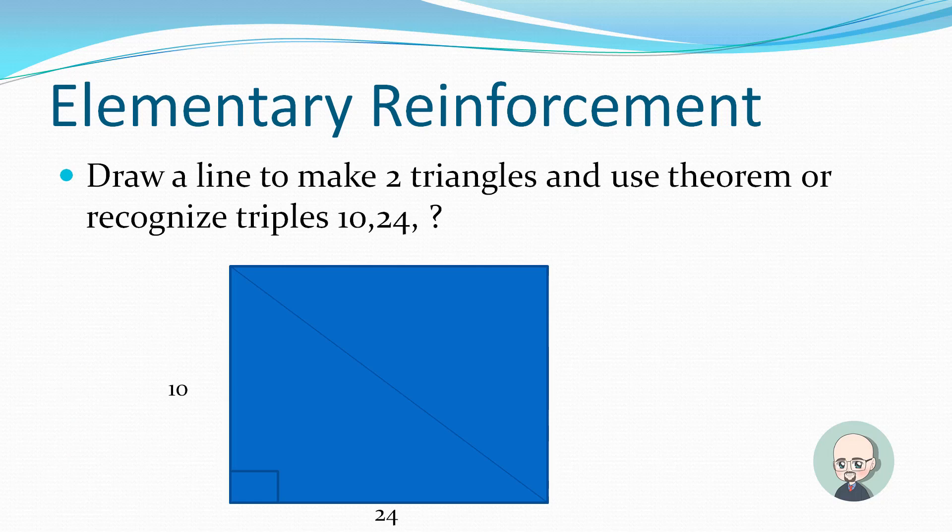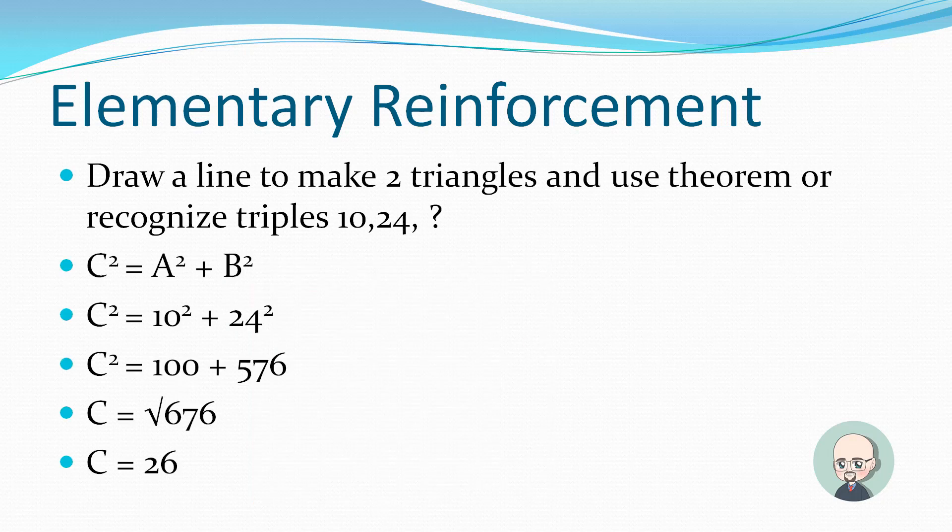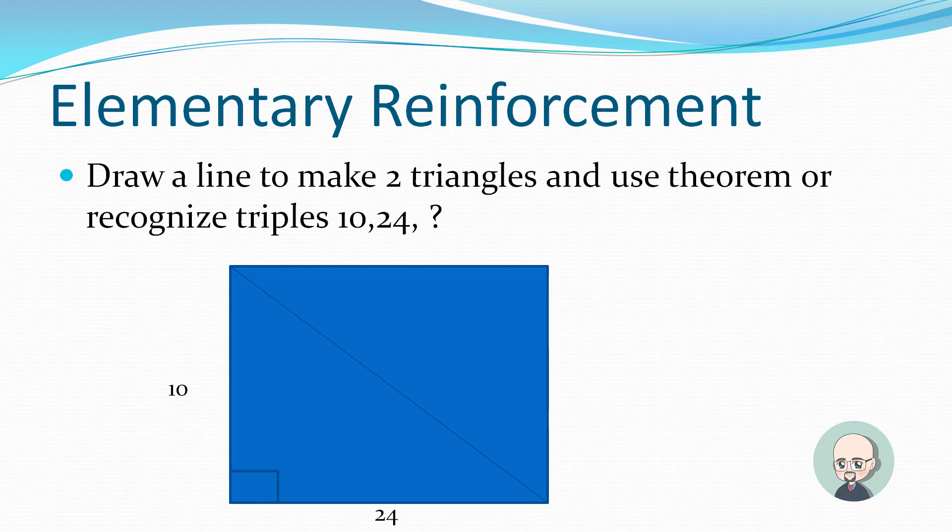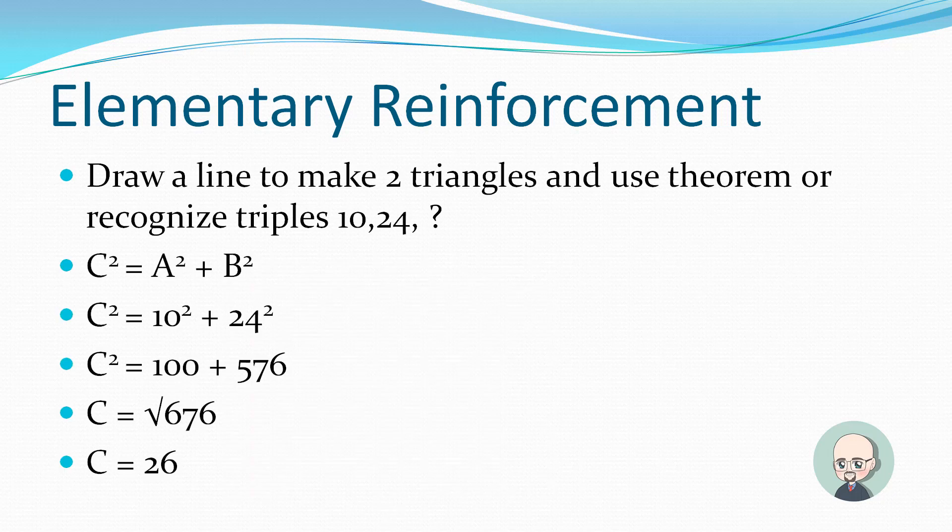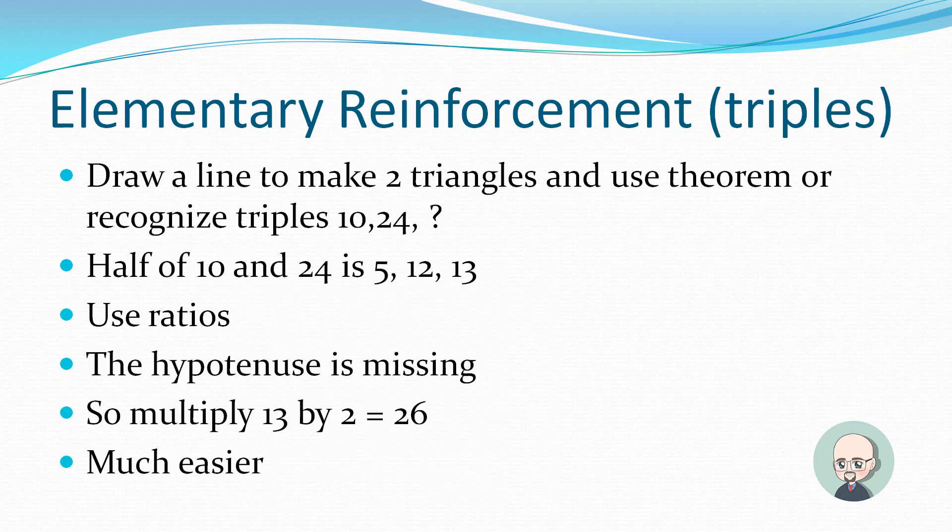So the lengths of our triangle are 10, 24, and 26. And since I bisected this neatly, and the opposite sides are equal, obviously the 26 will also be the same as the diagonal for the other side.